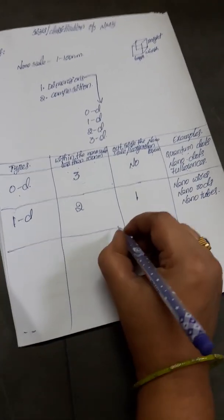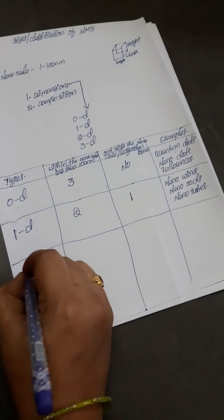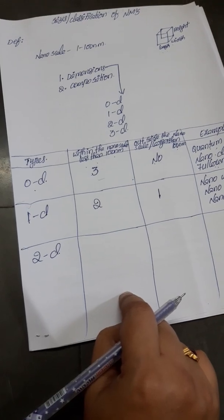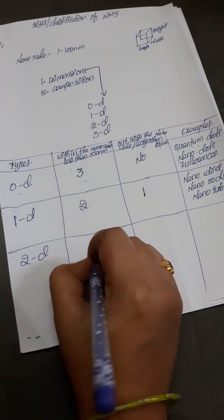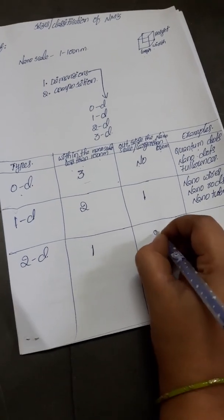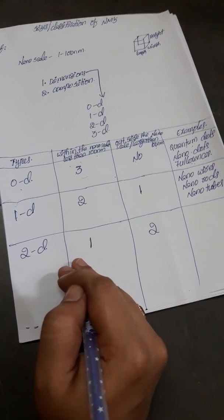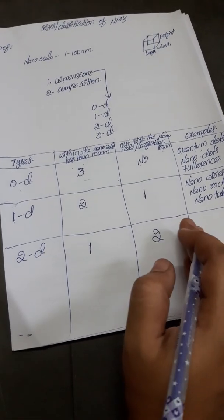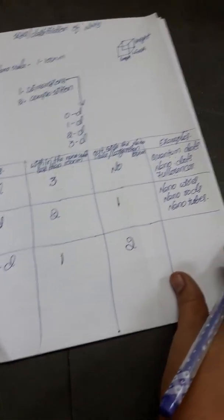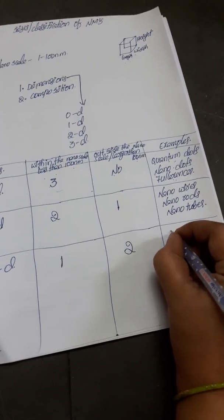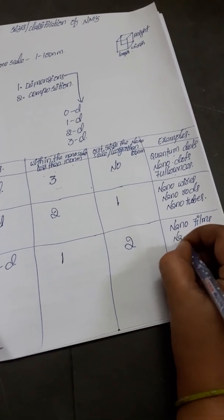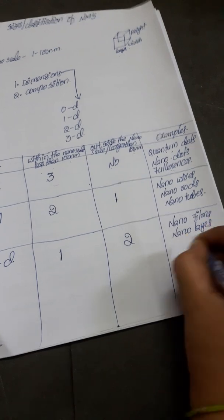Next we move on to two dimensional nanomaterials. Two dimensional nanomaterials are materials where one dimension is within the nanoscale and two dimensions are outside the nanoscale. One dimension will be less than 100 nanometers and two dimensions should be larger than 100 nanometers. Examples of these materials are nanofillings, nanolayers, and nanoplates.